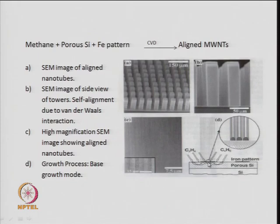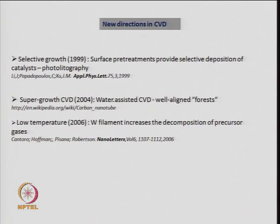The carbon first forms and dissolves in the catalyst, then reprecipitates as carbon nanotubes. The mechanism where the catalyst particle is at the bottom and the nanotube grows on top is called the base growth model (or root growth model) — the catalyst stays at the base and the tube grows upward. Several new directions have evolved from CVD: selective growth using photolithography to pre-deposit the catalyst selectively; super growth CVD (water-assisted CVD) to obtain well-aligned nanotube forests; and low-temperature methods using a tungsten filament to assist decomposition of precursor gases.